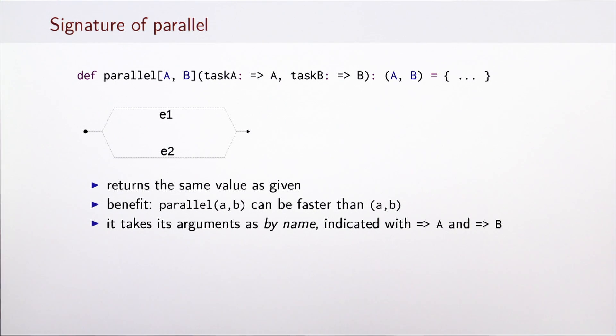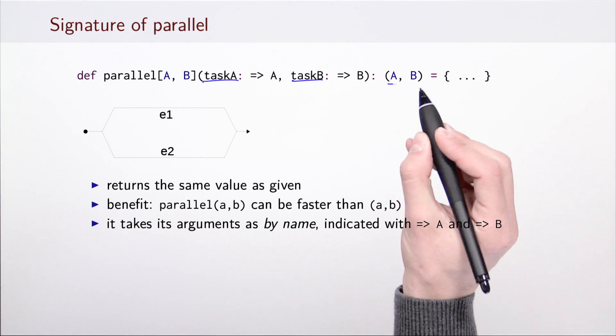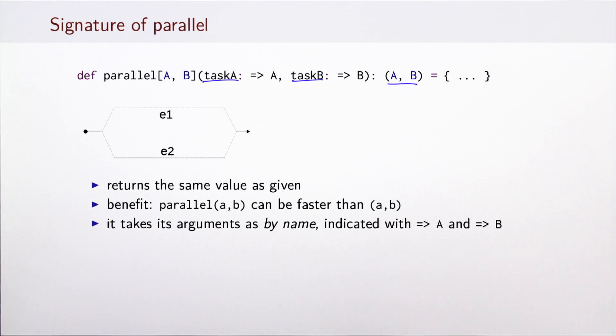In general, what is the signature of parallel? It takes two computations, let's call them task A and task B, and in fact returns the values of those two computations. So from the point of view of the value computed, parallel behaves as an identity function. Of course, the benefit is that the result may be computed faster than just computing the pair of these two computations. Observe that parallel takes its arguments by name, which is indicated by these two arrows in the signature of the function.